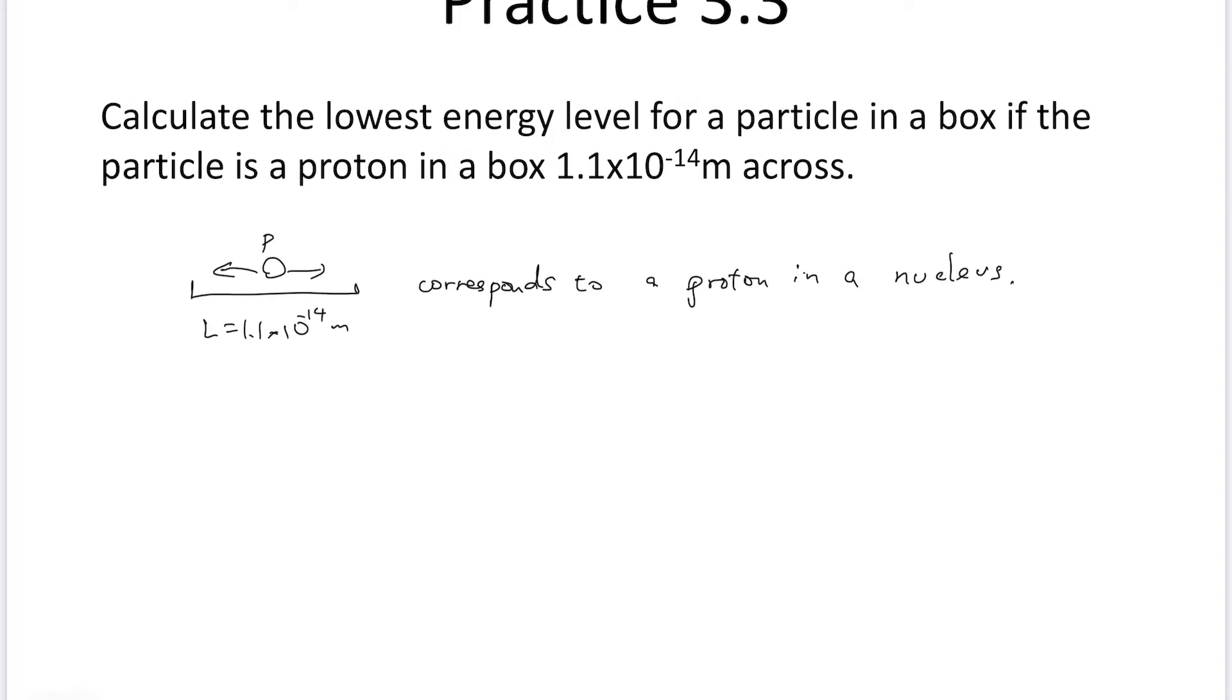Then the lowest energy state E1 is h squared over mass. In this case it is 8 times mass of the proton times L squared.